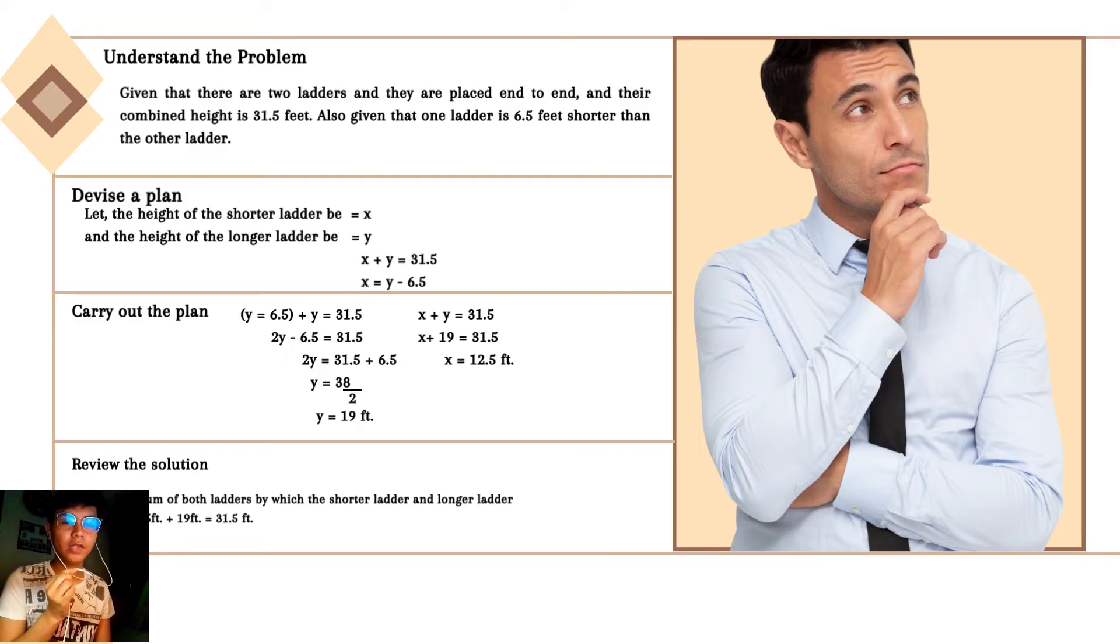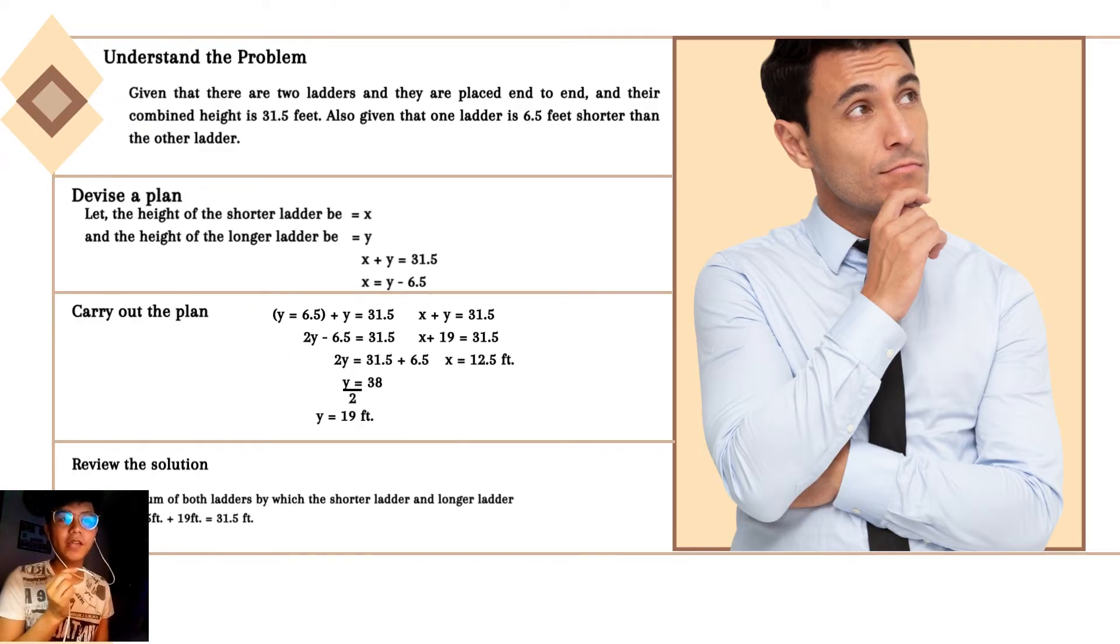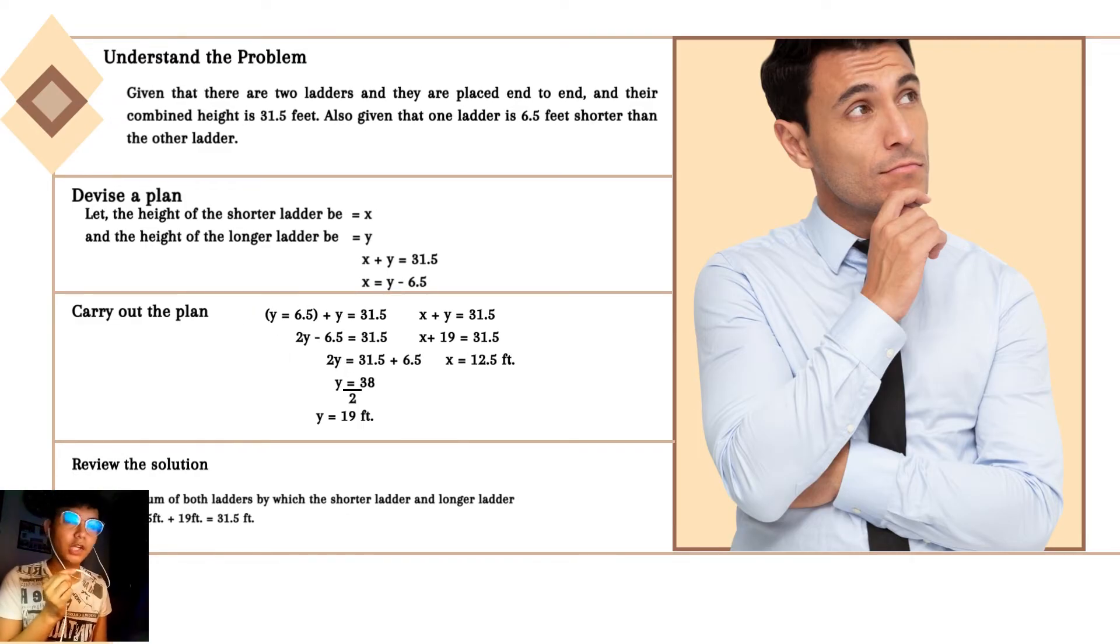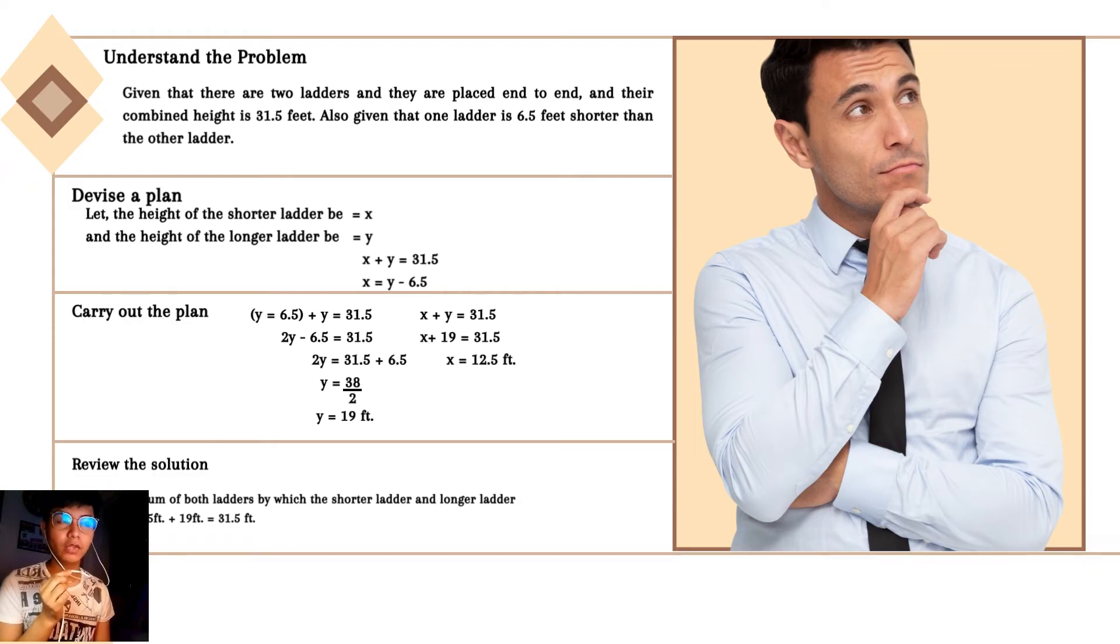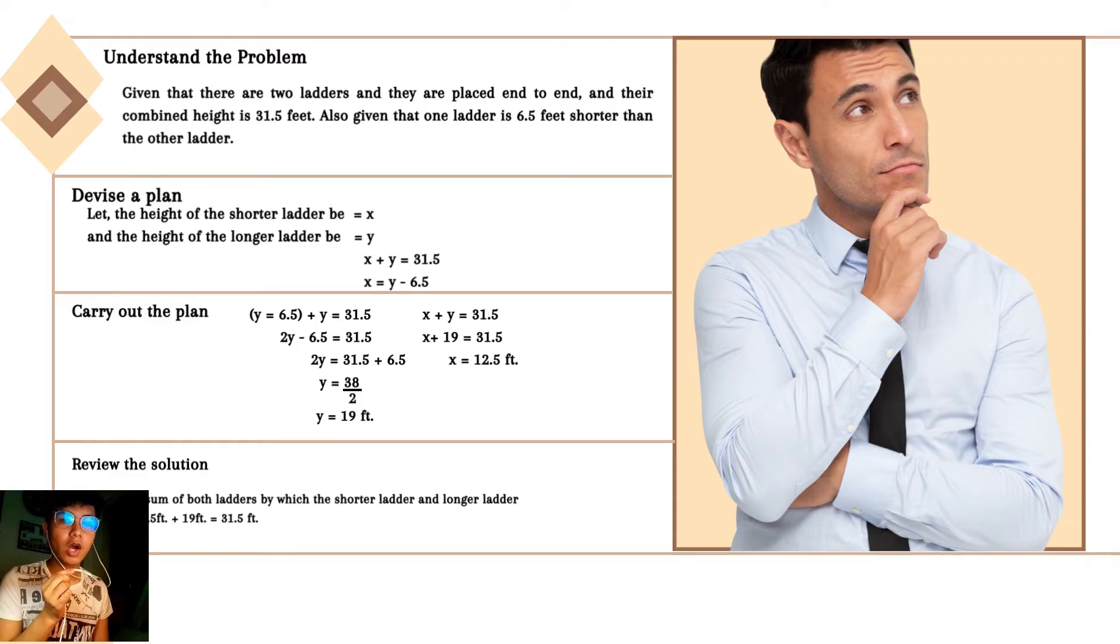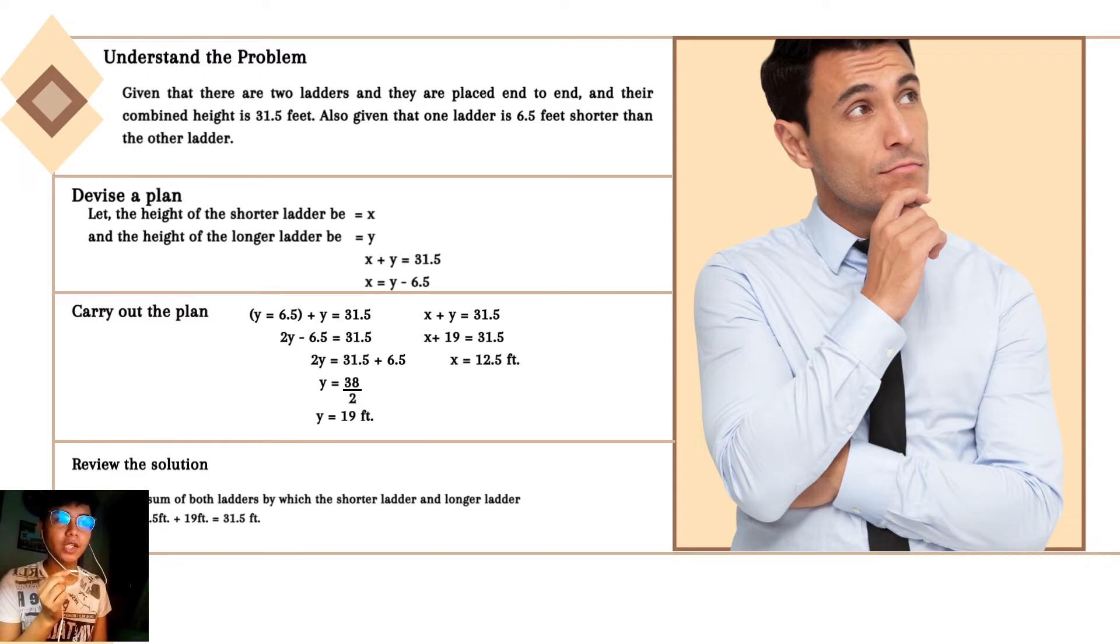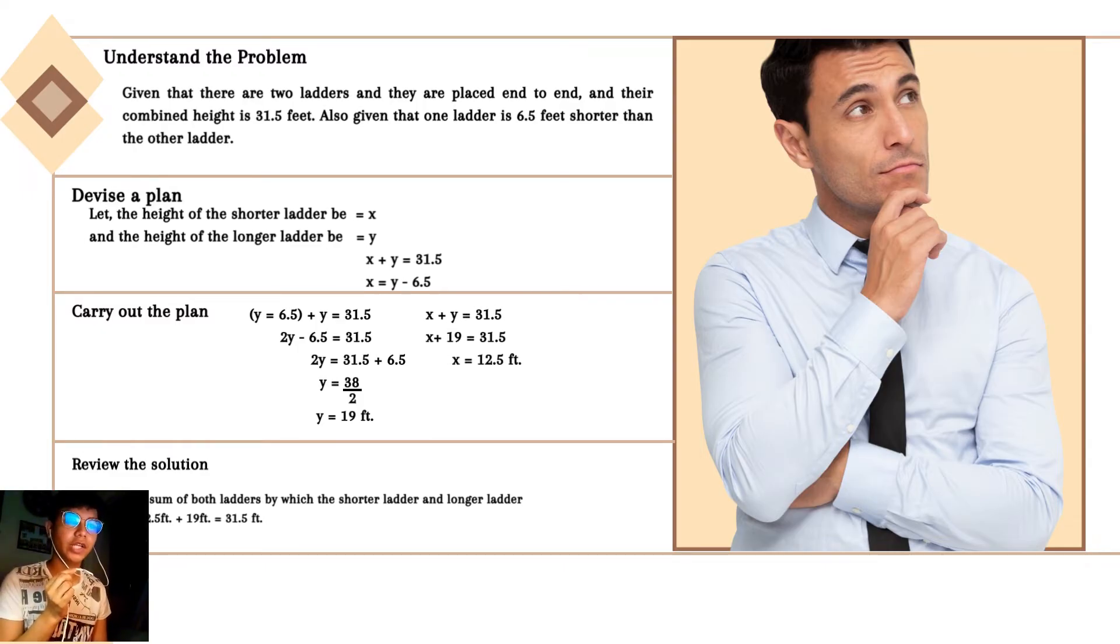The first method is to understand the problem. Given that there are two ladders and they are placed end-to-end and their combined height is 31.5 feet. Also given that one ladder is 6.5 feet shorter than the other ladder.